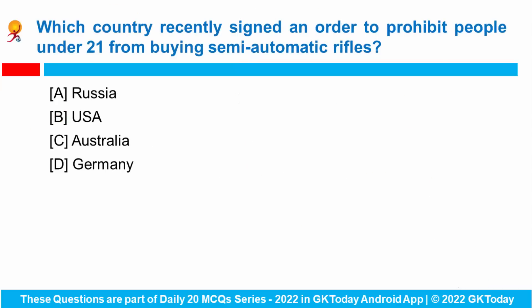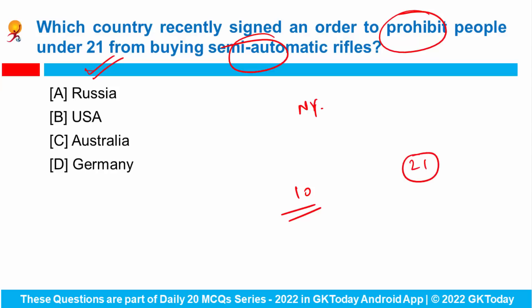Next question: Which country recently signed an order to prohibit people under 21 from buying semi-automatic rifles? New York has signed 10 public safety-related bills, prohibiting New Yorkers under the age of 21 from purchasing semi-automatic rifles. With this, New York became the first state to enact a major gun control initiative. The bill also requires microstamping on all new firearms, which will help implement the law and reduce gun-related crimes. The correct answer is USA.